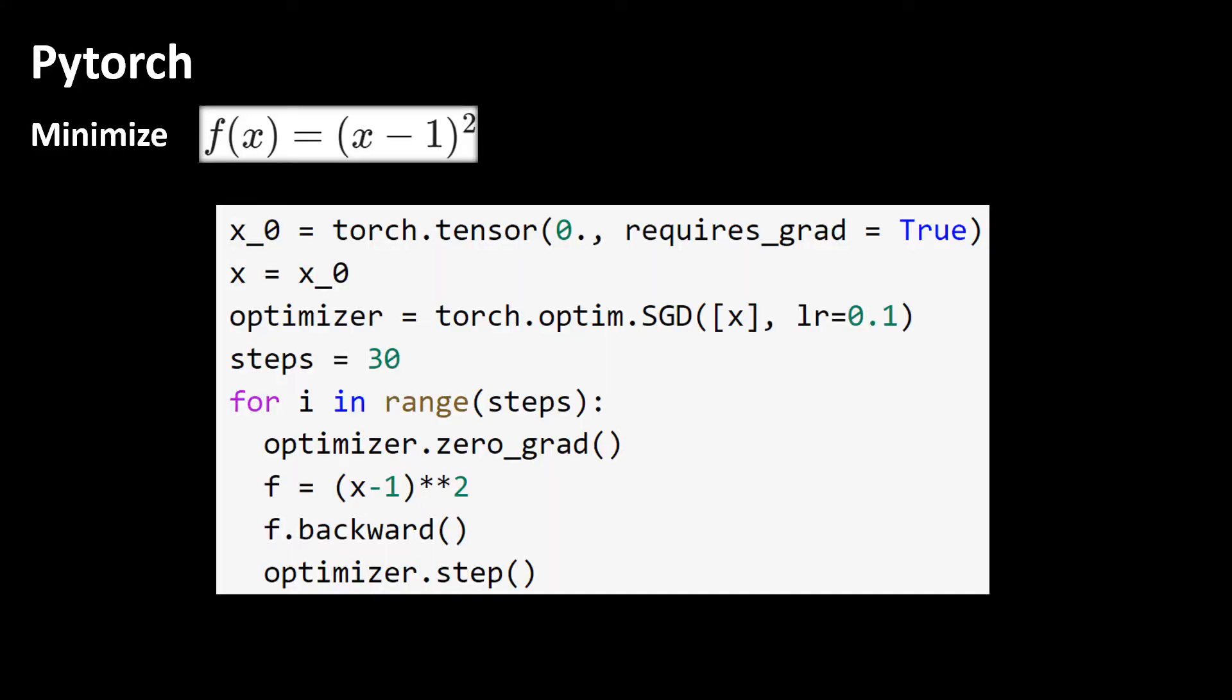Well if you are someone that looks only for the code, you made it. Here is the code. Only with nine lines of code you can find a minimizer of this function which is one. Of course you need to import PyTorch module.